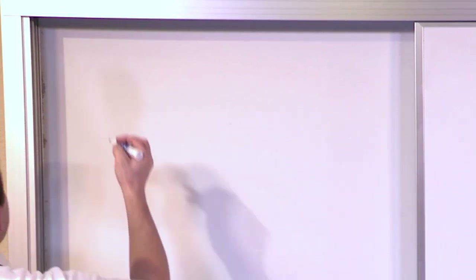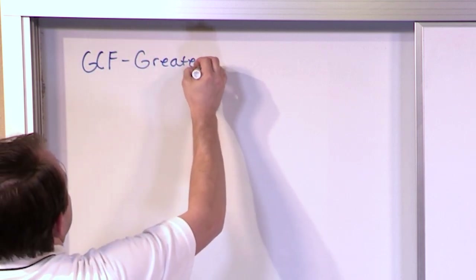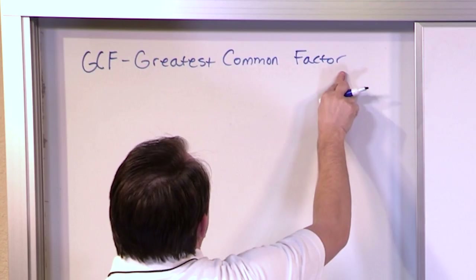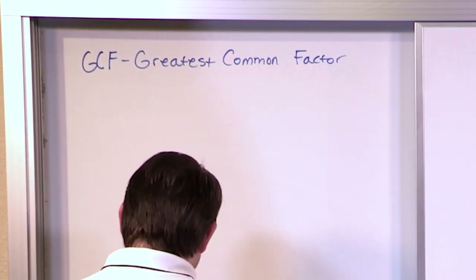The first thing to understand is: what is a greatest common factor? We also call it GCF. If you remember in the last section we talked about how to find the factors of a number — that's basically just finding a list of all the numbers that will divide into whatever number we're talking about evenly. So when we find the greatest common factor, we're going to be trying to figure out the largest factor between two given numbers. The name is very descriptive — it's actually telling you exactly what it is.